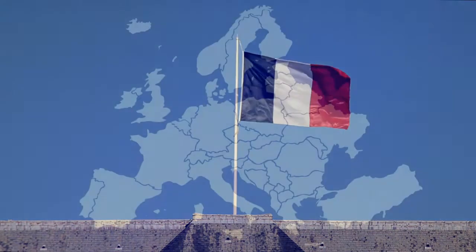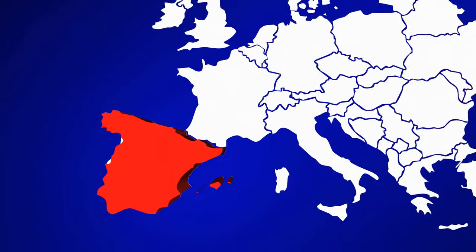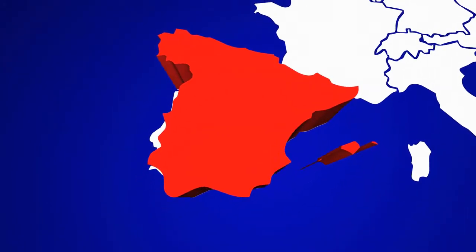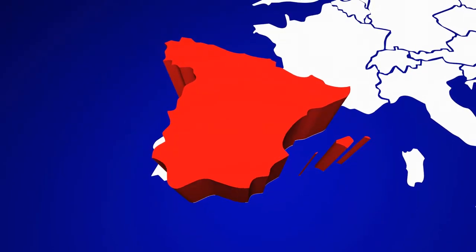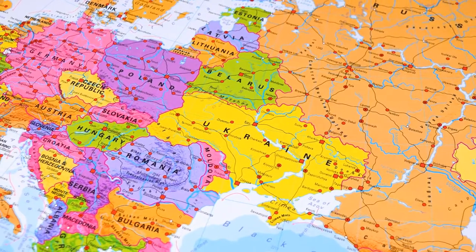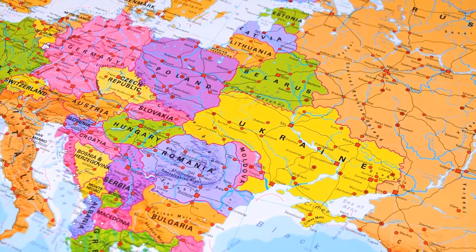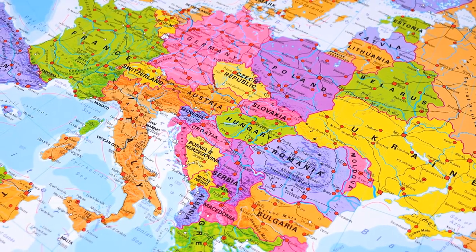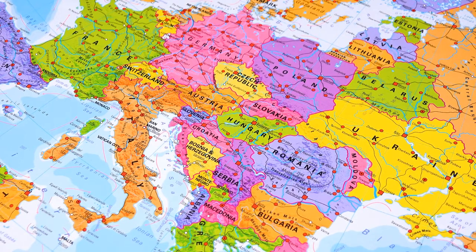Spain also went back to having a Bourbon monarch after being under the control of Napoleon's brother. Another way that reduced the threat of war was that they redrew some of the national boundaries after the Napoleonic Wars. Prussia took charge of the Rhine River's left bank and part of Saxony, while Austria was given territory in northern Italy, including Milan and Tuscany — a very rich deal.